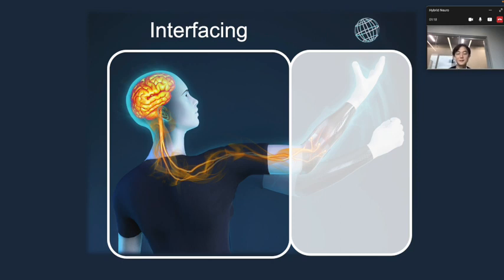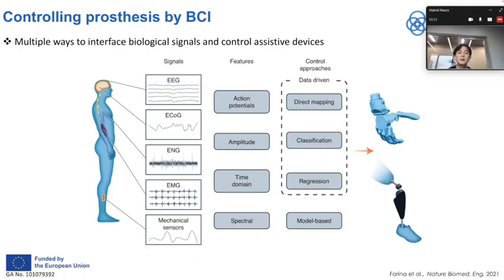We will start from the interfacing. There are multiple ways to interface biological signals and control assistive devices. The biosignals from a human can be EEG, ECOG, ENG, EMG, and mechanical sensors. The raw signals are difficult to decipher the motor intent, so we often extract features such as action potentials, amplitude, time domain signals, or spectrum. There are broadly two ways to control assistive devices: a data-driven approach or a model-based approach.